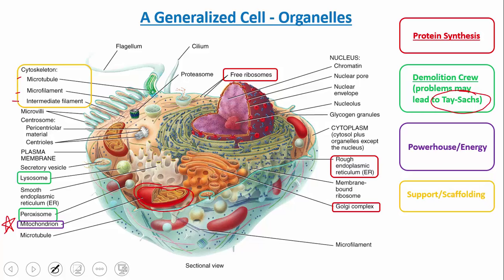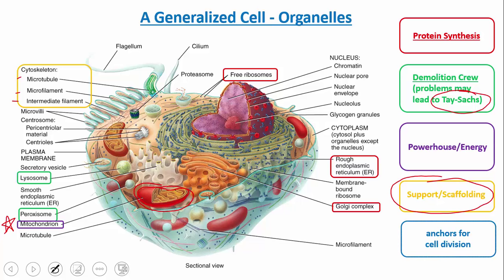One intermediate filament called lamin lines the inside of the nucleus and is involved in many things like DNA replication, transcription, as well as support. The cytoskeleton does more than just support and scaffolding, though that is its main function. Finally, structures called centrosomes anchor the cell for division — when microtubules reach out and latch onto chromosomes to separate them, the centrosomes serve as anchors for these microtubules at the poles of the cell.